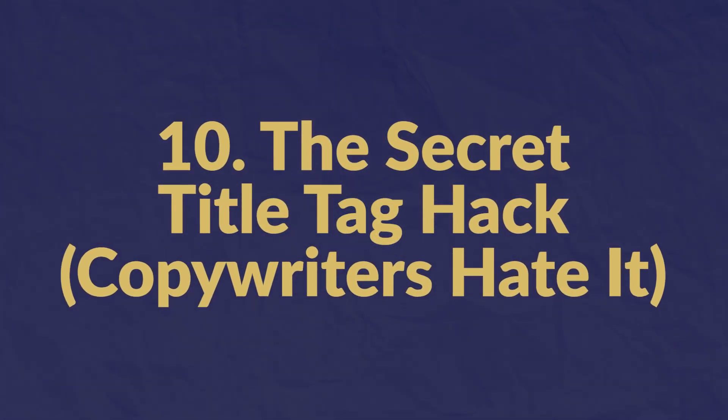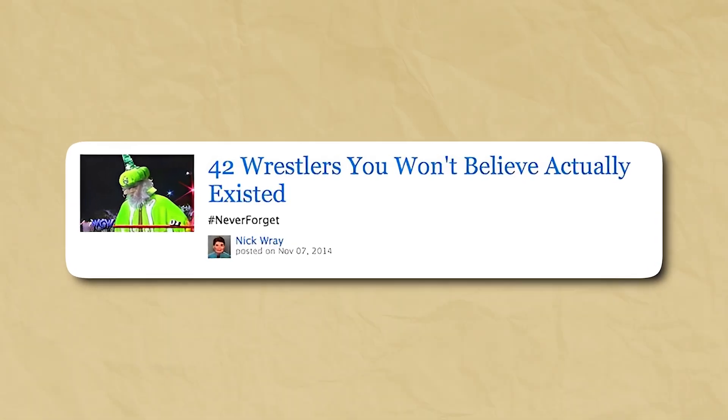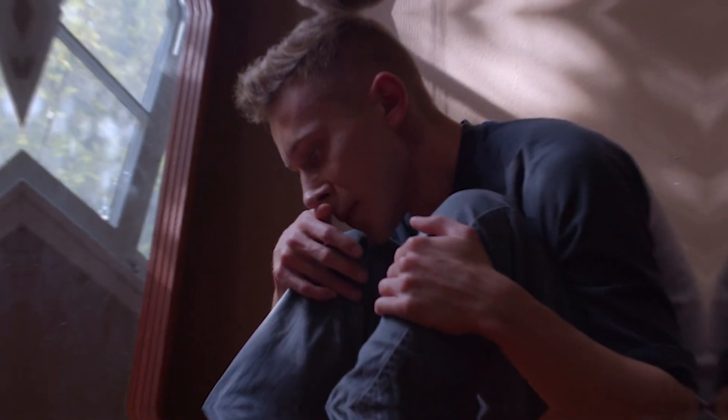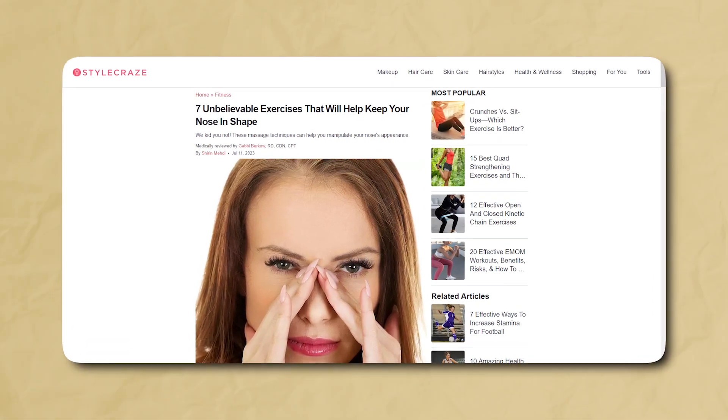Number ten: the secret title tag hack — yes, the classic clickbait headline. They work mainly because they leave open loops in our mind and engage natural human curiosity. Give readers a sneak peek into what they can find out by clicking your link without giving too much away. Employ tantalizing language that evokes surprise, amazement, or speaks to deeply rooted fear. However, use clickbait sparingly — overuse can hurt your brand's perceived value.